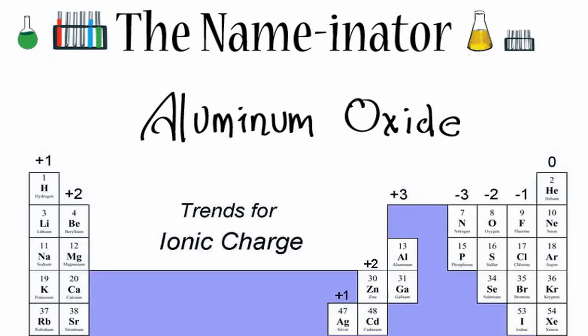When we look on the periodic table, we can see that aluminum has a plus 3 charge, and oxygen has a minus 2 charge.